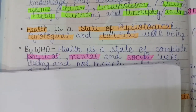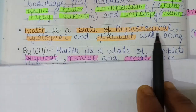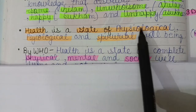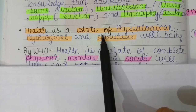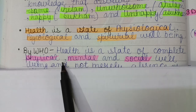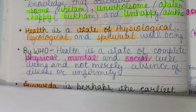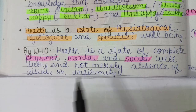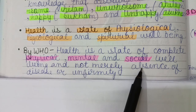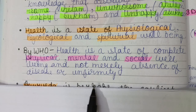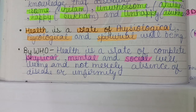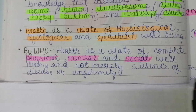Health is a state of physiological, psychological, and spiritual well-being. These three terms are used for health in Ayurveda. The WHO definition of health is: health is a state of complete physical, mental, and social well-being, and not merely the absence of disease or infirmity. Anyone is considered fit if he is physically, mentally, and socially fit.